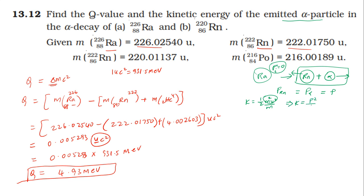Kinetic energy equals momentum squared divided by 2m. The Q value equals total kinetic energy, which is kinetic energy of alpha particle plus kinetic energy of Rn particle. So Q equals p-squared over 2 times mass of alpha, plus p-squared over 2 times mass of Rn radon particle.